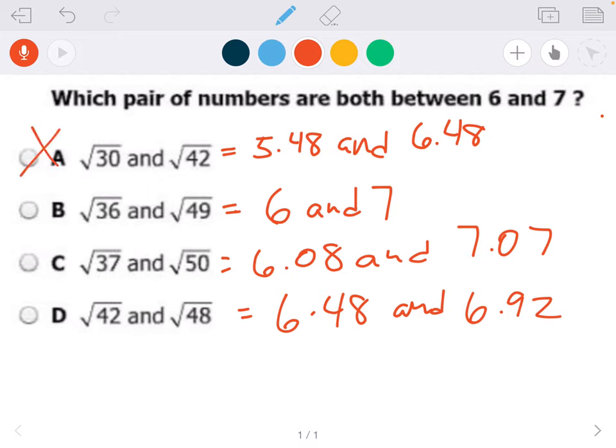So it's definitely not A because the first one's not in between 6 and 7. It's not C because the 6.08 is in between 6 and 7 but the second number does not work. B is a tempting choice, but you have to pay special attention to the question. It's saying they're both between 6 and 7, not exactly 6 and 7, but between 6 and 7.